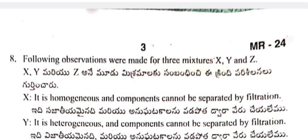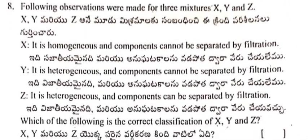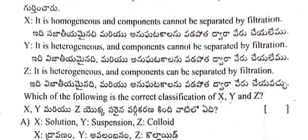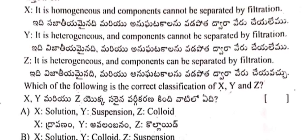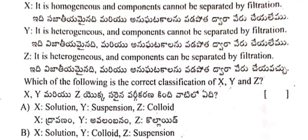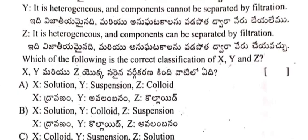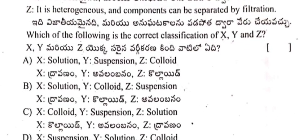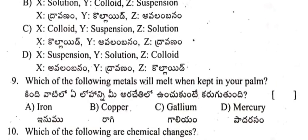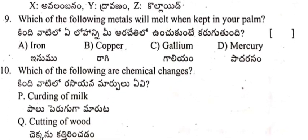Following observations were made for three mixtures X, Y, and Z. X is homogeneous and components cannot be separated by filtration. Y is heterogeneous and components cannot be separated by filtration. Z is heterogeneous and components can be separated by filtration. Options A, B, C, D are given.